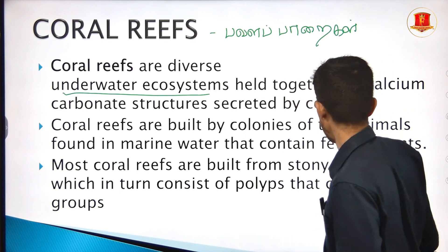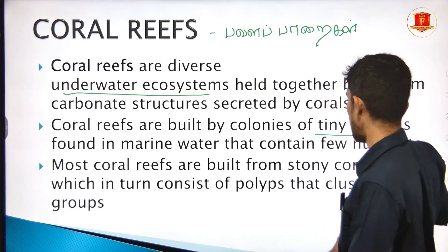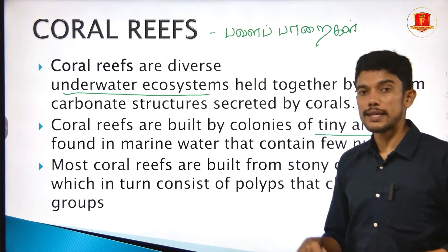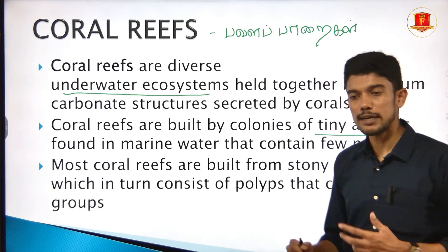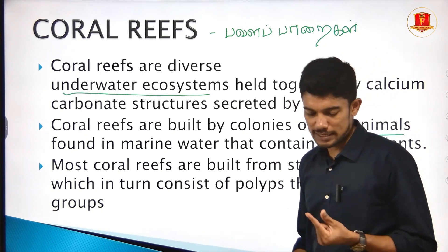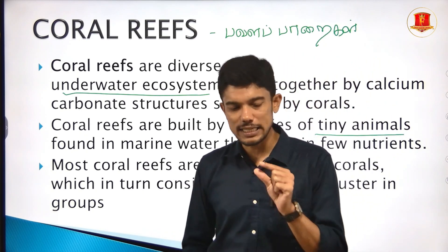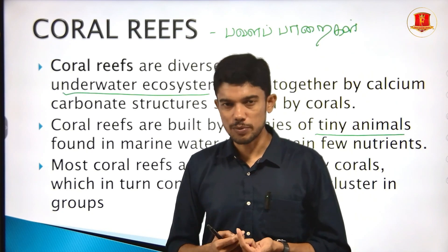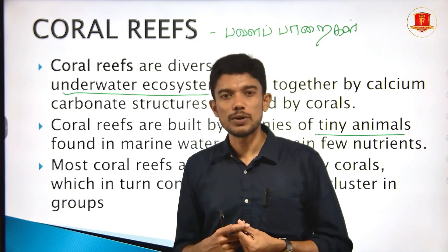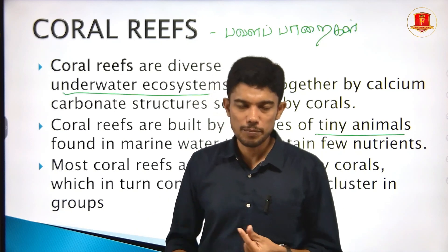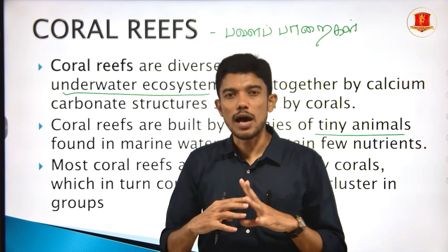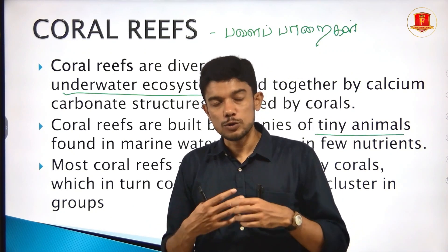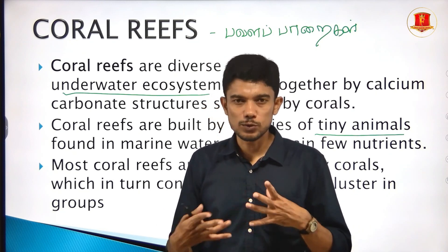Coral reefs are made up of tiny animals called coral polyps. Coral polyps are associated with zooxanthellae — a type of algae — and produce a calcium structure. This algae provides stability and food manufacture, and is responsible for making coral polyps very colorful. There are many species of zooxanthellae.